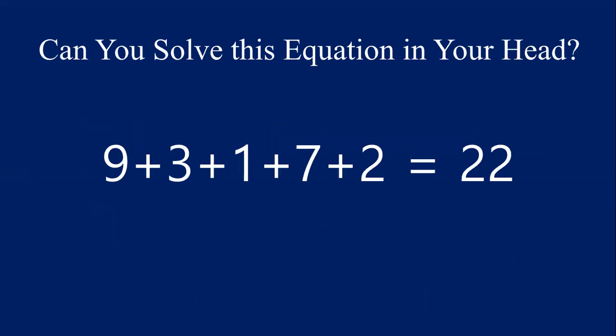So when I looked at this equation, I did not add in order. Instead of adding 9 plus 3, I looked for complements of 10 first, and I thought, oh, I see some complements. 9 and 1 make 10, and 3 and 7 make 10.